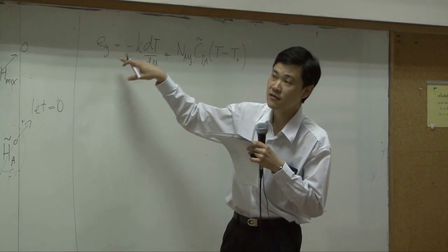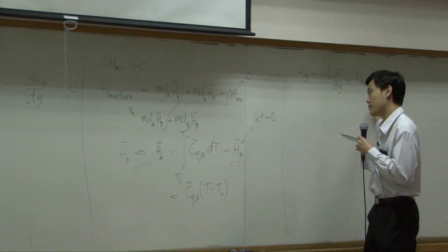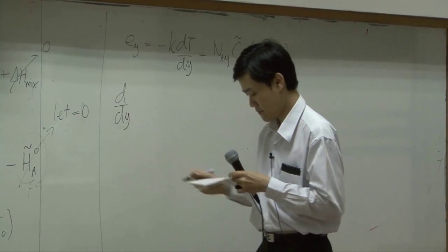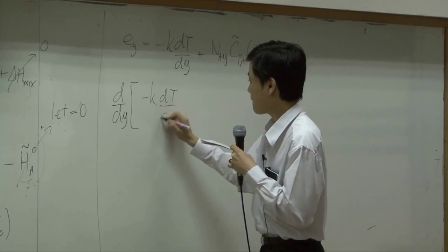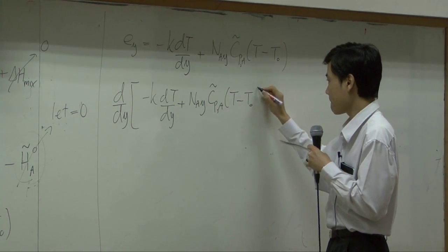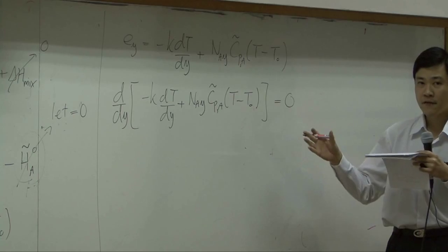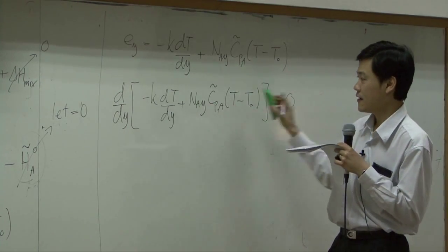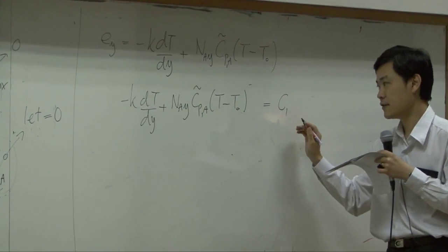Then replace this into our equation of energy here. The differentiation of this term is supposed to be equal to zero. So d/dy of that is equal to zero. Can you solve that? Of course. So if differentiation here is zero, that means everything inside is equal to a constant C1.